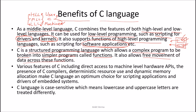Various features of C include direct access to machine-level hardware APIs — API stands for Application Programming Interface — where your hardware works and direct access can be taken with C programming. The presence of a C compiler, deterministic resource use, and dynamic memory allocation make C an optimum choice for scripting applications and drivers for embedded systems. Dynamic memory allocation means we allocate memory on runtime using functions like malloc.